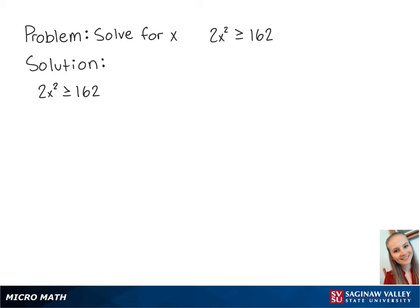For this problem, we're going to solve for x in the inequality 2x squared is greater than or equal to 162. First, we want to get the right side equal to 0, so we're going to subtract 162 from both sides so that we have 2x squared minus 162 is greater than or equal to 0.